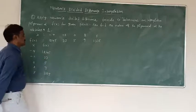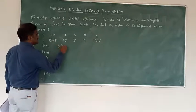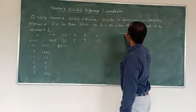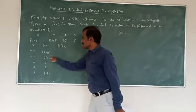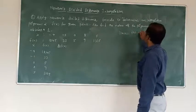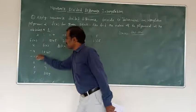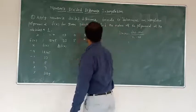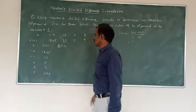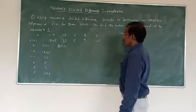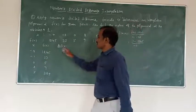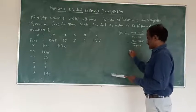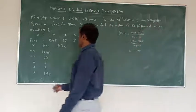Now to find out the first divided difference. The formula we already discussed: f[x0, x1] equals f(x1) minus f(x0) divided by x1 minus x0. So f(x1) value 33 minus f(x0) value 1245, divided by x1 minus x0, which is minus 1 minus minus 4, giving plus 4. The result is minus 404.